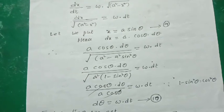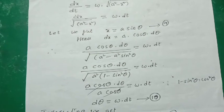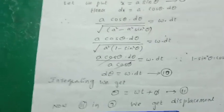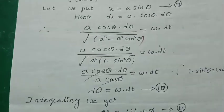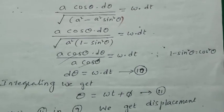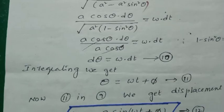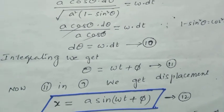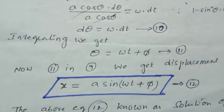Simplifying: (a cosθ dθ)/√(a²(1 − sin²θ)) = ω dt. Using the identity 1 − sin²θ = cos²θ, the denominator becomes a cosθ, so a cosθ and a cosθ cancel, giving dθ = ω dt. Integrating both sides: θ = ωt + φ, where φ is a constant. Substituting back into equation (9), x = a sinθ, we get x = a sin(ωt + φ). This is the solution of the simple harmonic oscillator.